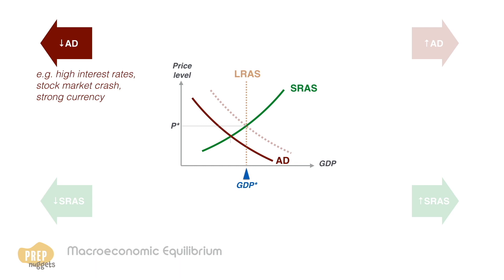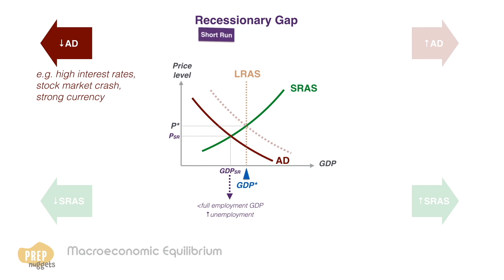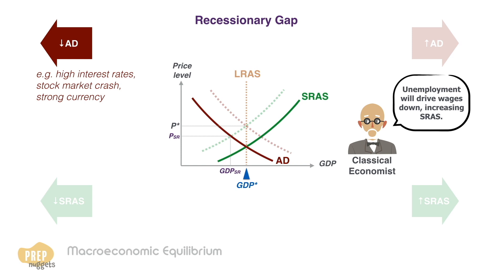In the short-run, the economy produces less at a lower price level. This new short-run equilibrium output is less than full employment GDP, which means there is high unemployment in the economy. We call this a recession gap, where GDP and price levels decline in the short-run. Classical economists believe that nothing needs to be done to remedy this — they believe that unemployment would drive wages down, which in turn would increase SRAS and return the economy to its full employment level of real GDP, but at an even lower price level.